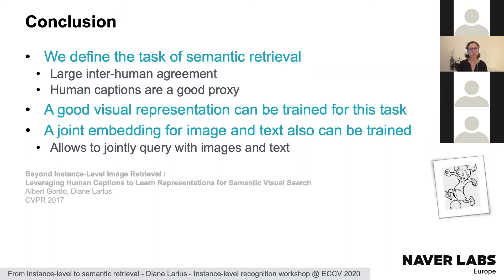To summarize Part 1: we showed we can define a semantic retrieval task with high inter-human agreement, that human captions are a good proxy for predicting semantic similarity, that we can learn strong visual representations for this task, and that building a joint image-text embedding space enables complex queries combining image and text.